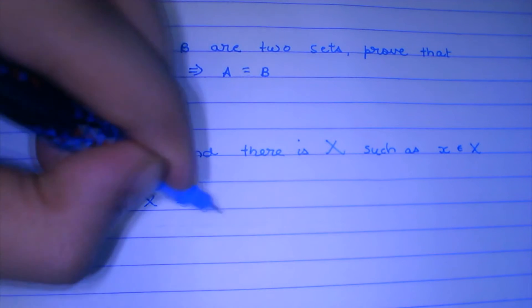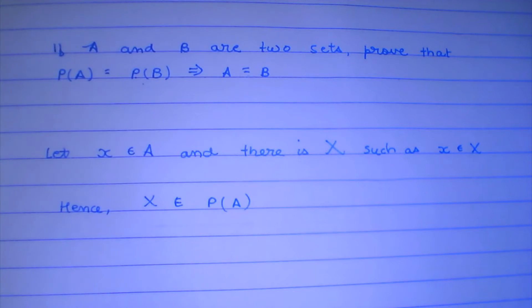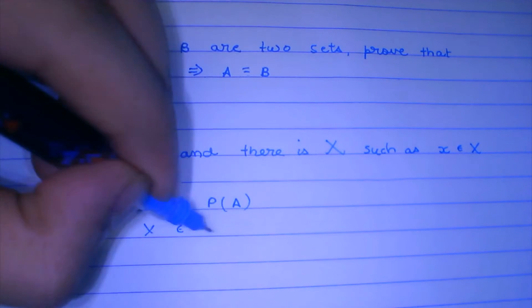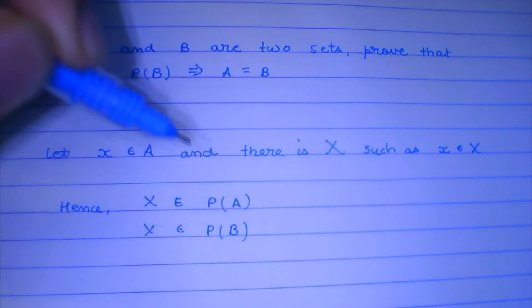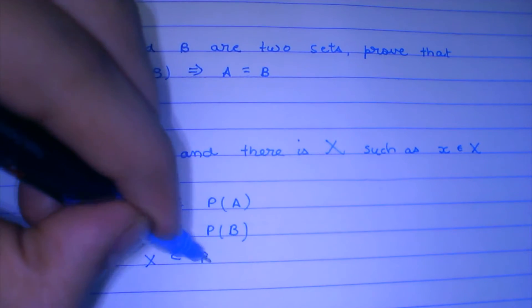Hence, this capital X is going to belong to the power set of A. Since the power sets are equal, this means X is going to belong to the power set of B also, which means that X is a subset of B.